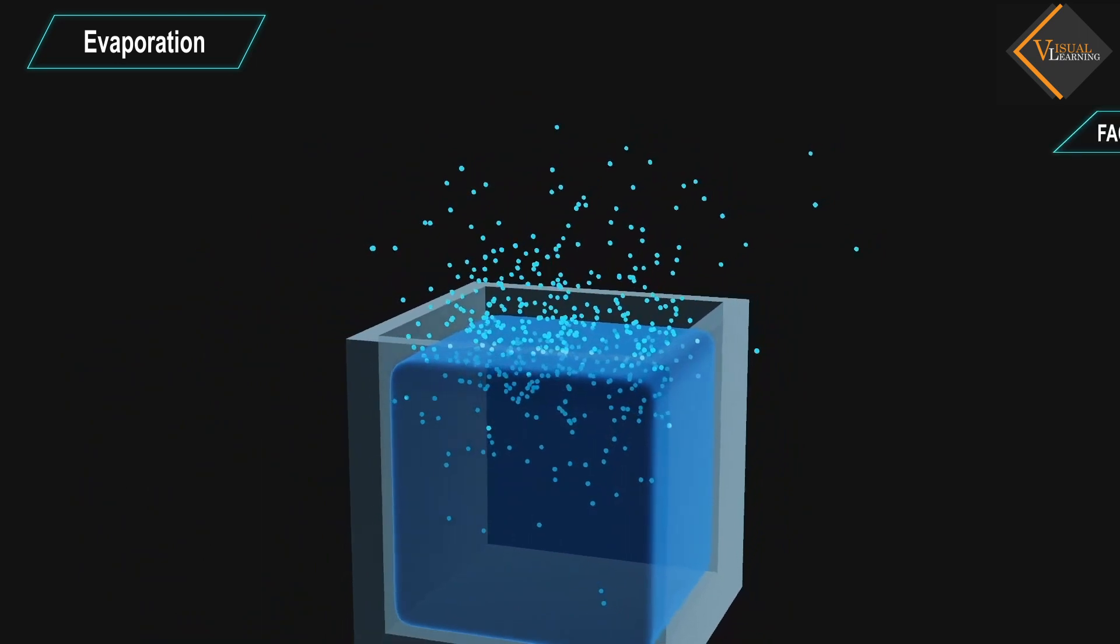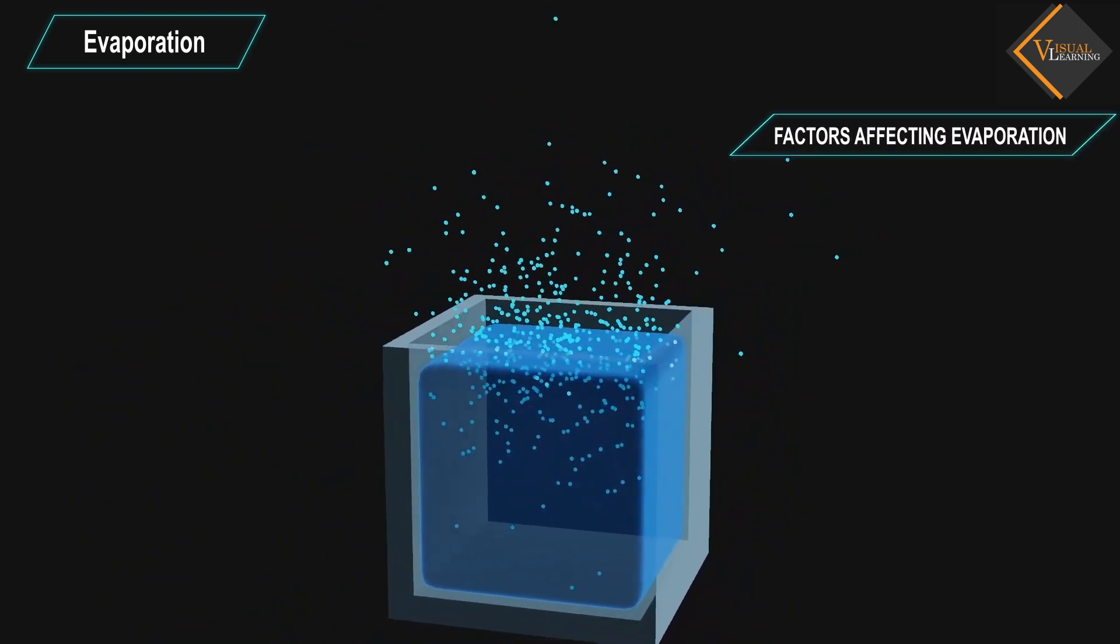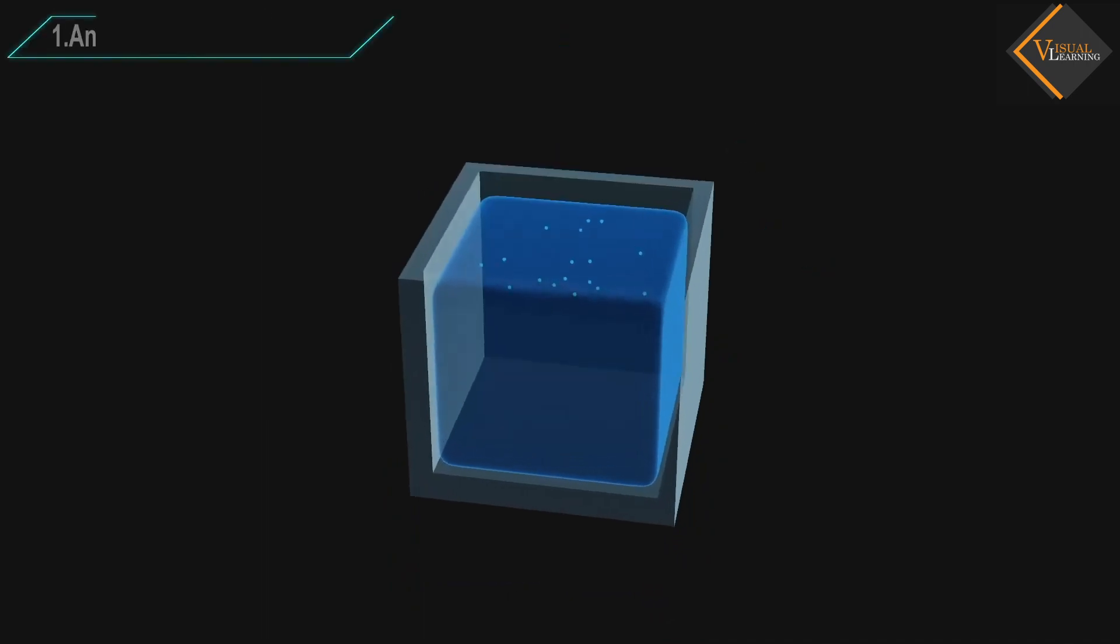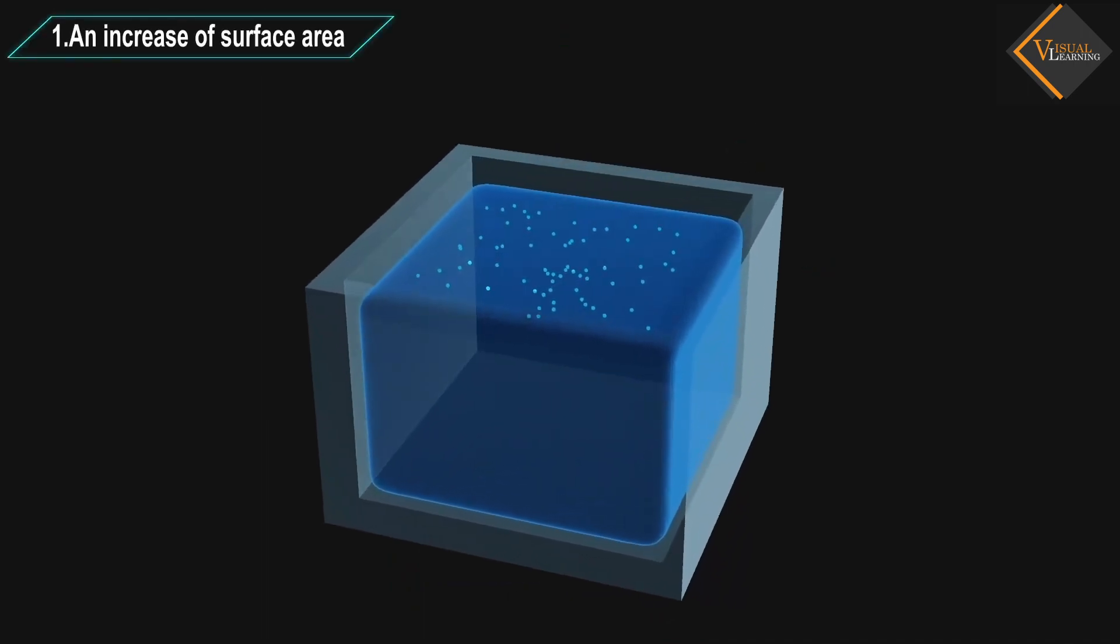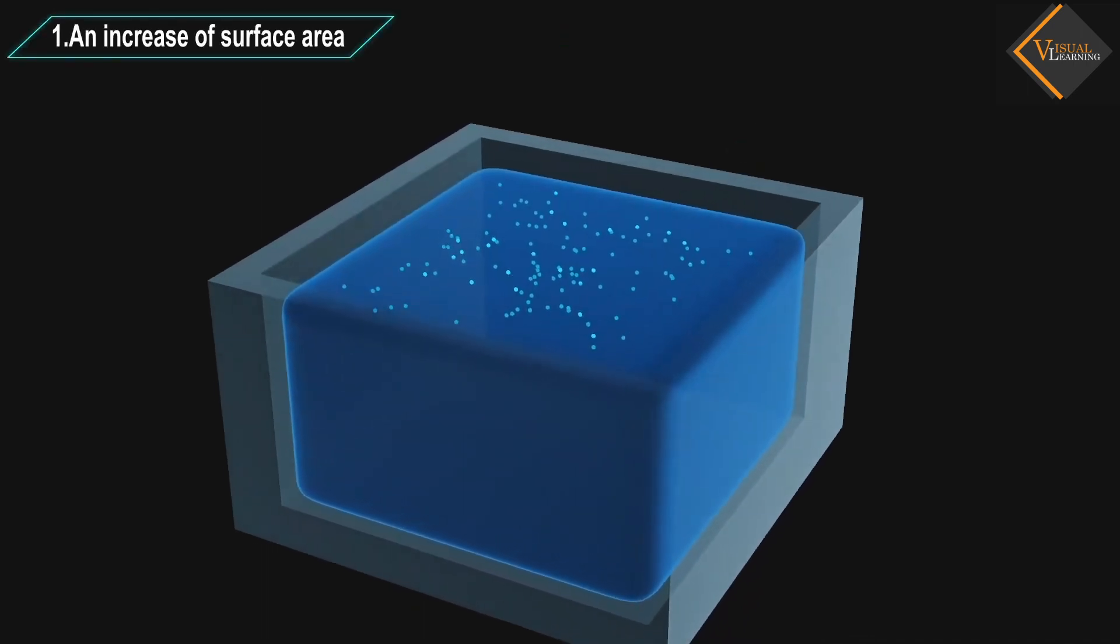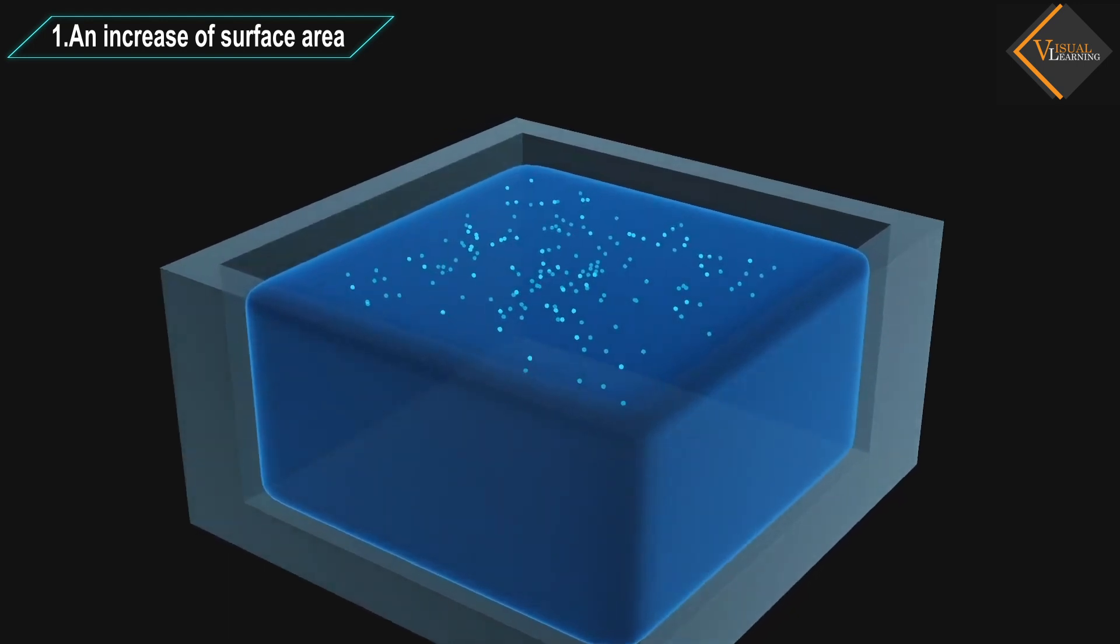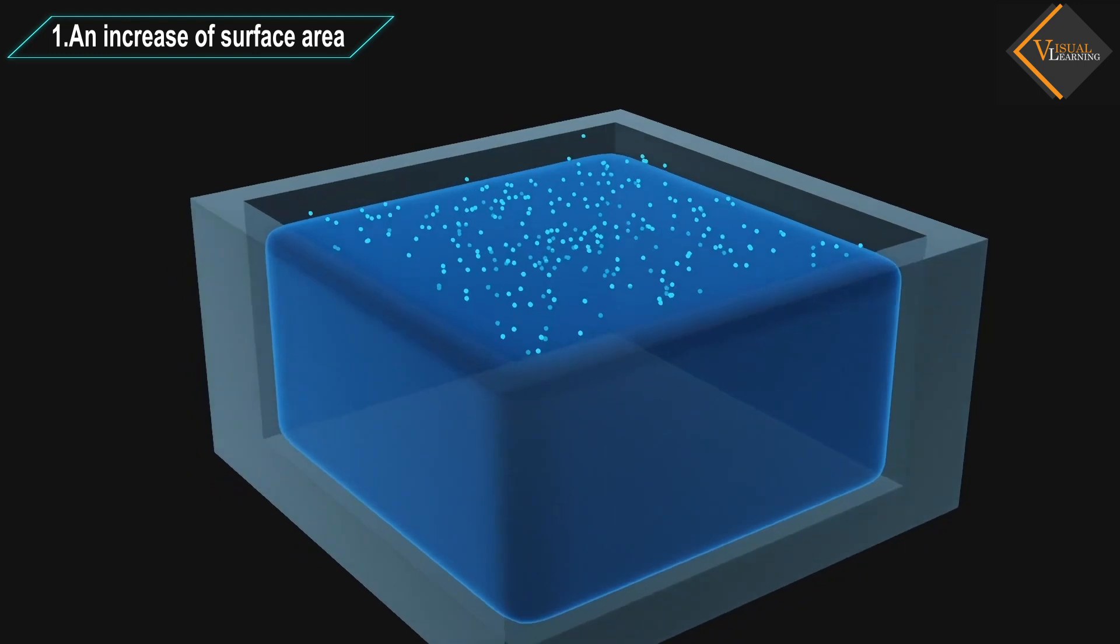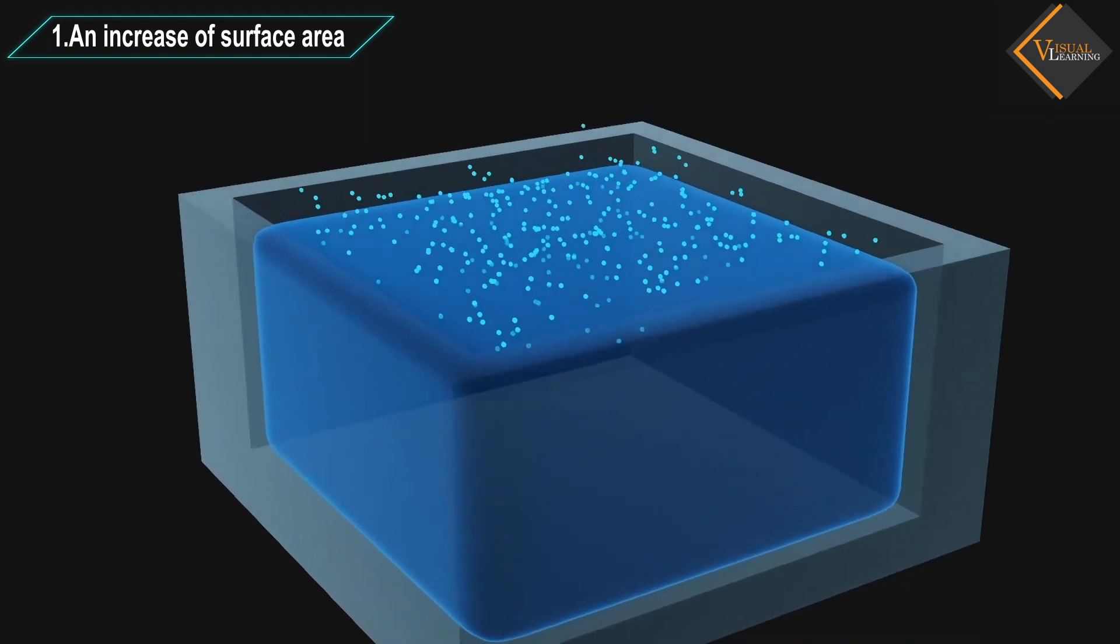Now let's understand factors affecting evaporation. An increase of surface area: We know that evaporation is a surface phenomenon. If the surface area is increased, the rate of evaporation increases.